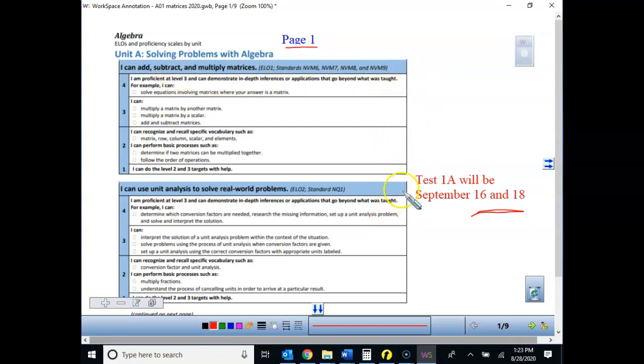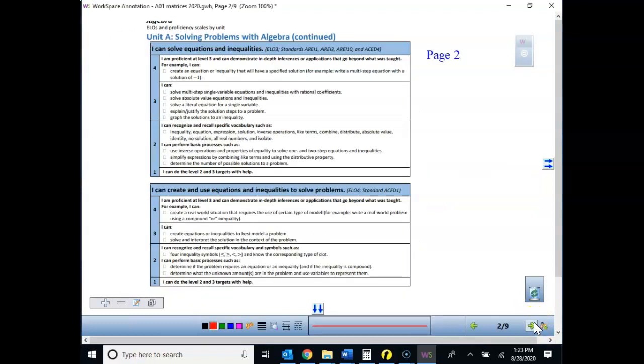These two proficiencies, ELOs, will be on our first test, which will be September 16th and 18th, depending on the day that you're in school. Our goal for you is to get to that level three. Now, we are not grading these with proficiency standards right now, scales. You will get a letter grade, but just like I talked about in the initial video, this is just going to be what we are shooting for each one. This is page two. This is going to be the second half of the unit, which we'll take another test on.